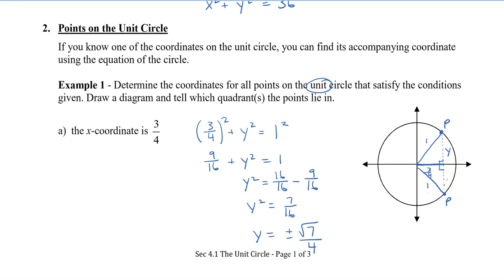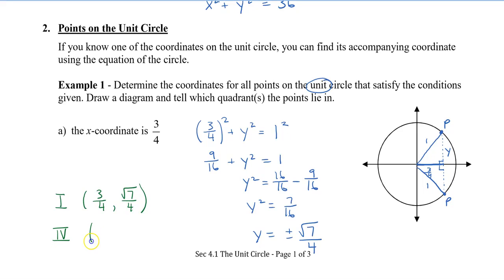So the coordinates: if it's in quadrant 1, the point is (3/4, √7/4). If the point is in quadrant 4, that's going to be (3/4, −√7/4).